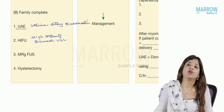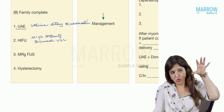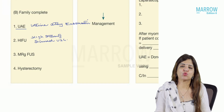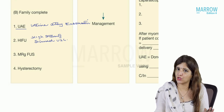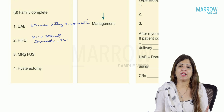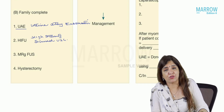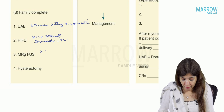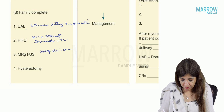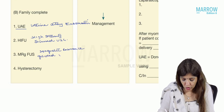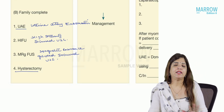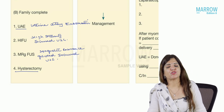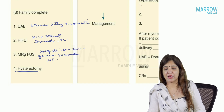In HIFU, the patient lies down and high intensity waves are focused on the fibroid, leading to necrosis and decrease in fibroid size. If done directly with ultrasound waves, it is called HIFU. If the patient is placed in an MRI machine and high intensity ultrasound waves are delivered through it, it is called MRgFUS — magnetic resonance guided focused ultrasound. The four options when family is complete are: uterine artery embolization, HIFU, MRgFUS, and hysterectomy.